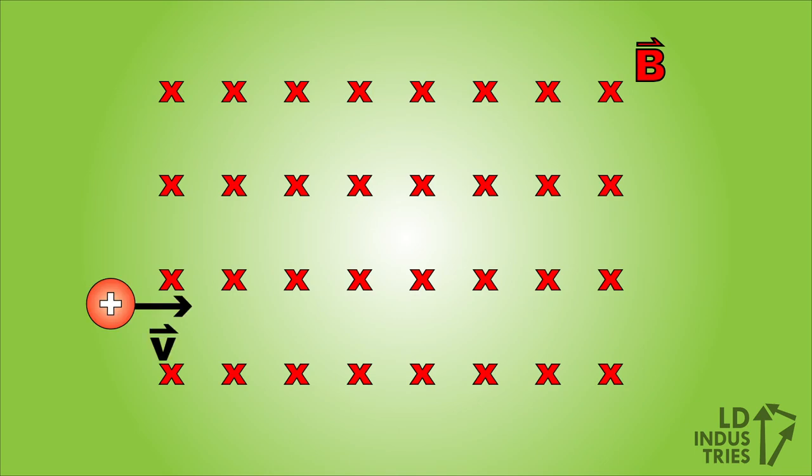But if the particle moves at a right angle to the field, we get a magnetic force which is always at a right angle to the velocity through the entire motion of the particle, which causes uniform circular motion.